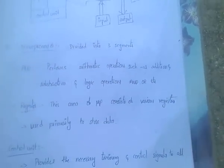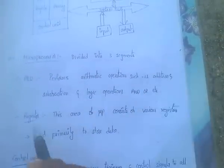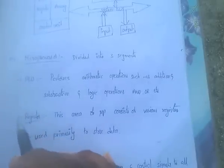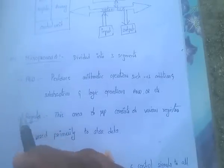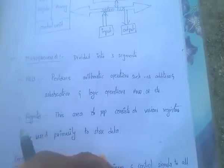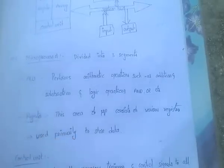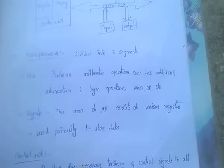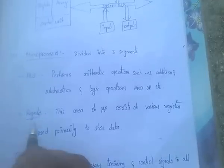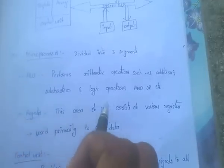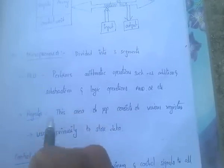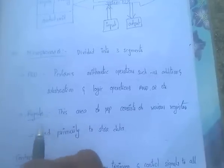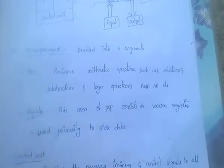Coming to the next one — register. A register is used to store data. The primary function of a register is to store data. The area of the microprocessor consisting of various registers is primarily used to store data.